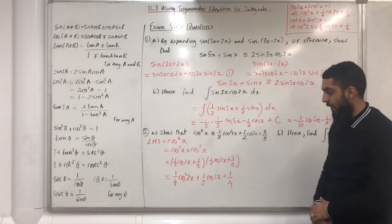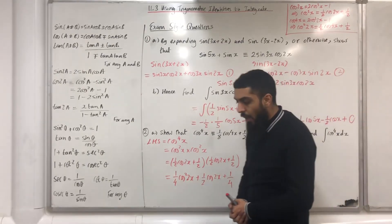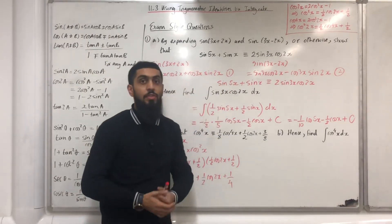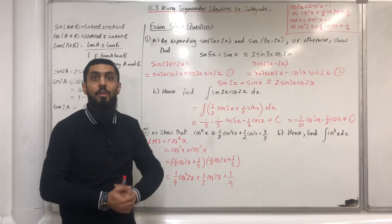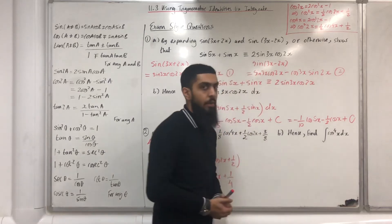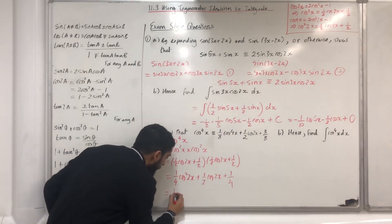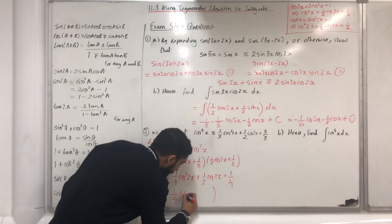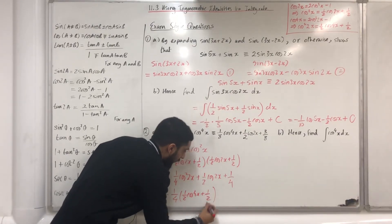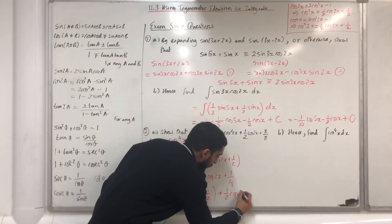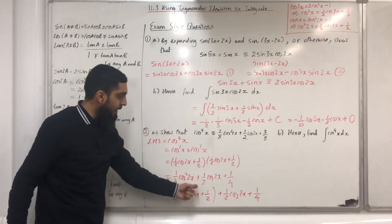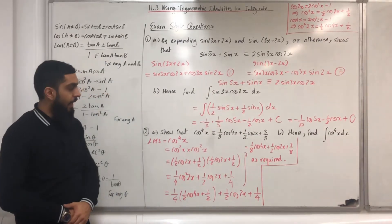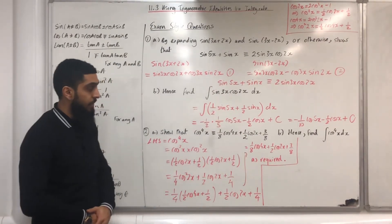After expanding the double brackets, I get one quarter cos squared 2x plus one half cos 2x plus one quarter. The next step is to use the double angle formula again: cos 4x equals 2 cos squared 2x minus 1, making cos squared 2x the subject gives one half cos 4x plus one half. Replacing cos squared 2x, then expanding and simplifying, I get 1 over 8 cos 4x plus 1 over 2 cos 2x plus 3 over 8, as required.